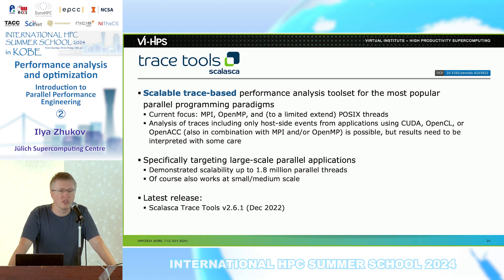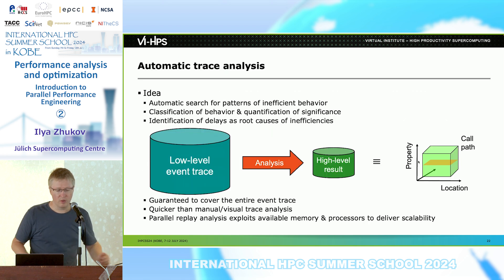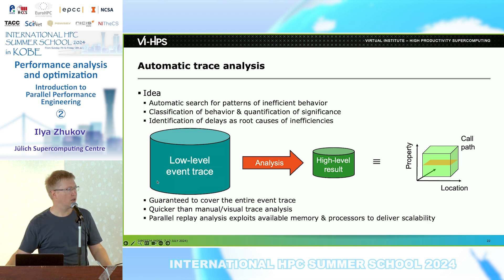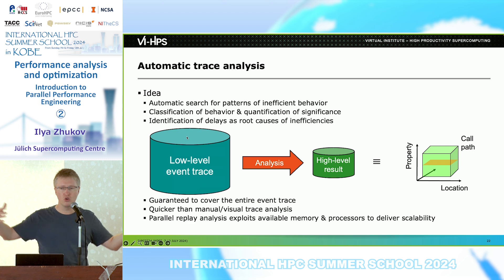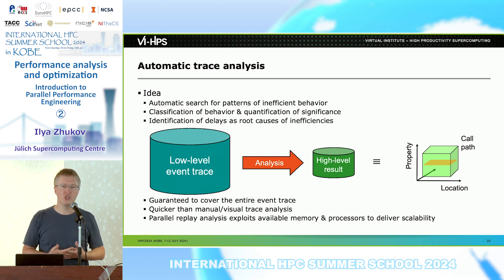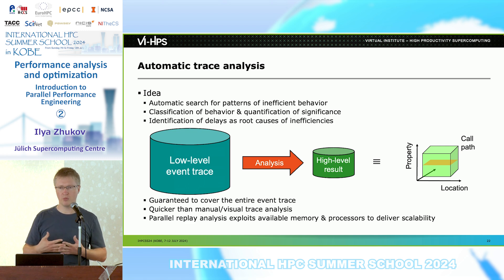Of course, it works with a smaller scale too. The general idea is that you have low-level event traces collected with ScoreP. We have a huge amount of traces, but we would like to automate the search. So we pre-define some inefficiency patterns, and Scalasca will automatically search the traces for these particular inefficiency patterns.